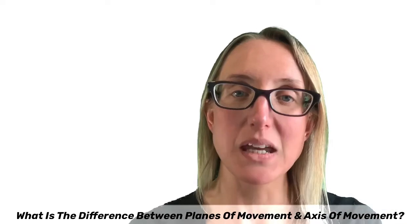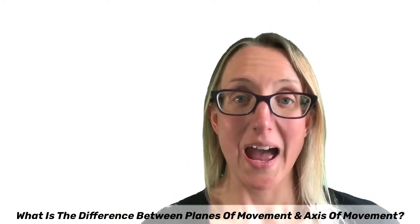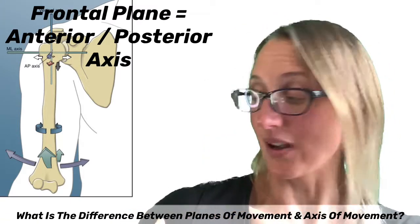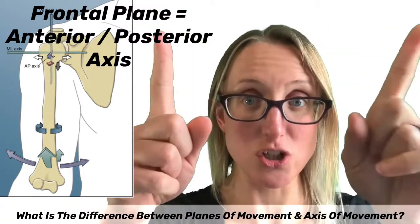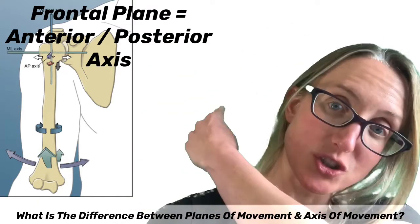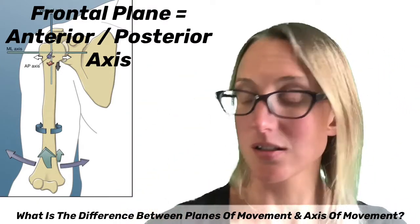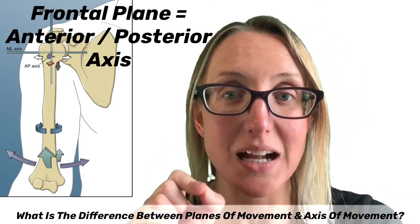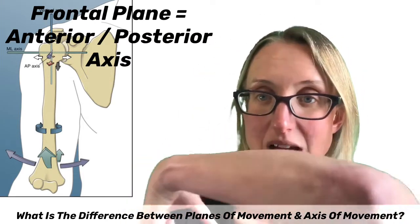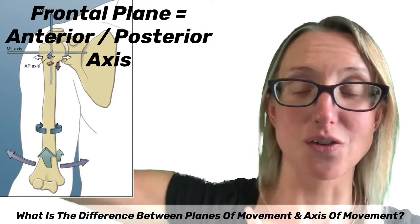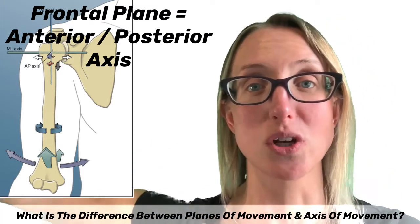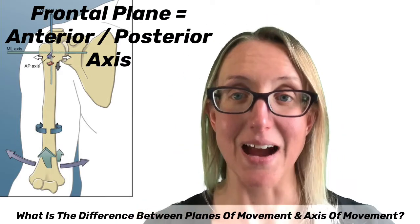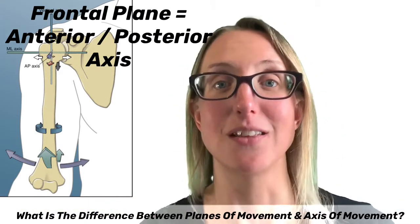For sagittal plane movements, it's always a medial-lateral axis of movement. For a frontal plane movement, the axis of movement goes from anterior — meaning the front of the body — to posterior, which is behind us. So anterior-posterior is the imaginary line, the axis of movement. As that rotates, my arm moves around it — my shoulder joint moves around that axis of movement, which allows that joint action to happen in the frontal plane.